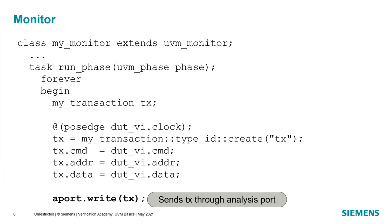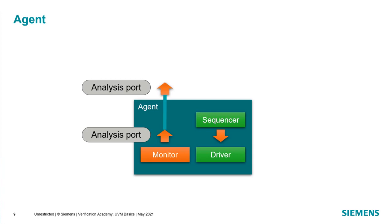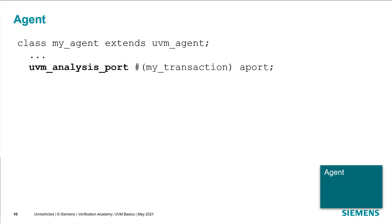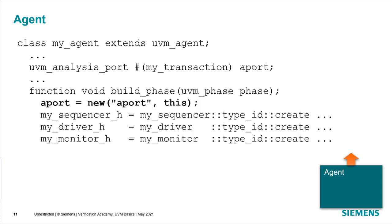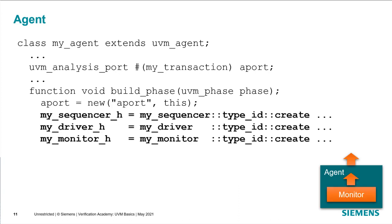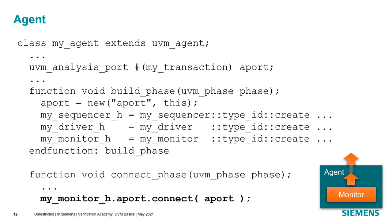When we connect the monitor to an analysis export, the analysis export supplies the implementation of the write method. In an agent, we have the monitor recognizing the transaction, writing it out its analysis port, and we need to propagate that up so the agent can pass that information out to the environment. So the agent will also have an analysis port. In the connect phase, we connect the analysis port of the monitor to the analysis port of the agent at the top level, allowing the transaction to be communicated out through the agent's analysis port to whatever subscriber may be connected to it.